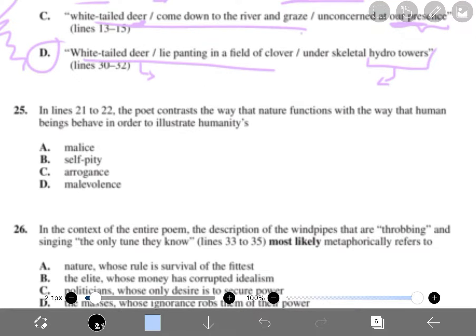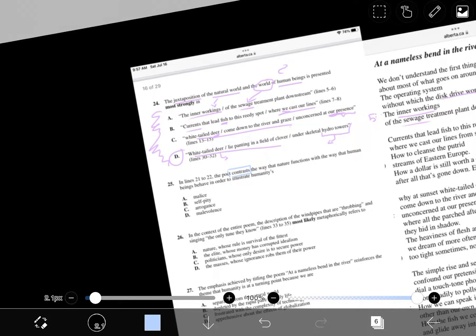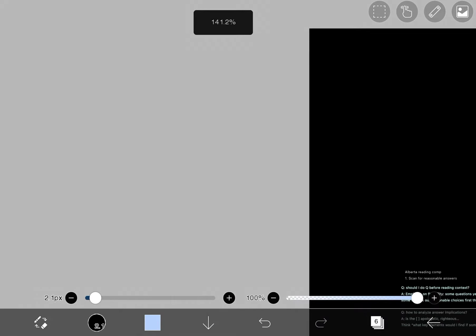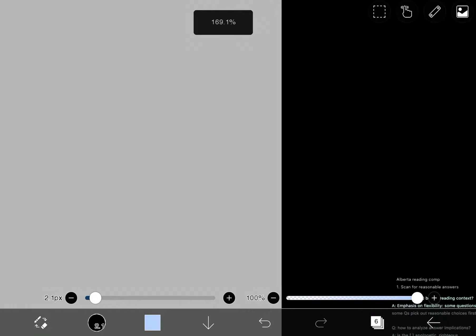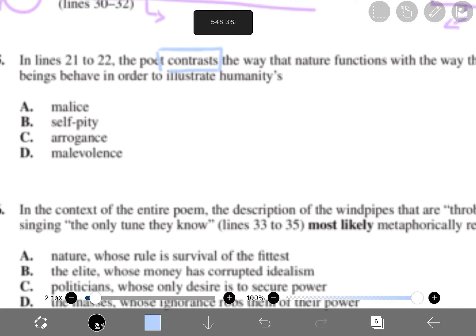Next question. In lines 21 to 22, the poet contrasts the way that nature functions with the way that human beings behave in order to illustrate. Contrast. Whenever you have some piece of literature, the contrast will always be the central conflict and the theme, the main idea. So by contrasting nature and humans, it's portraying the main idea of the poem. What might be the purpose that they want to contrast between nature and human? Just not reading this, they might contrast nature and human, probably because maybe we're way out of date. We're not focusing on what's most important and all of that stuff. So now, let's check the answers.